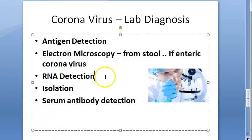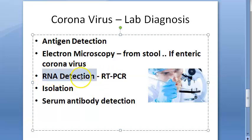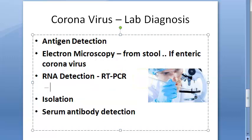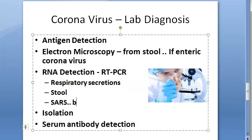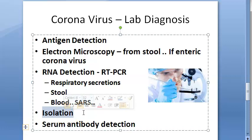As it is an RNA virus, you will do reverse transcriptase PCR assay. You will try to detect coronavirus RNA in respiratory secretions and even stool samples. If it is SARS virus, you can also detect from blood. For isolation, tracheal ring culture is no longer used — cell culture is very difficult for coronavirus.